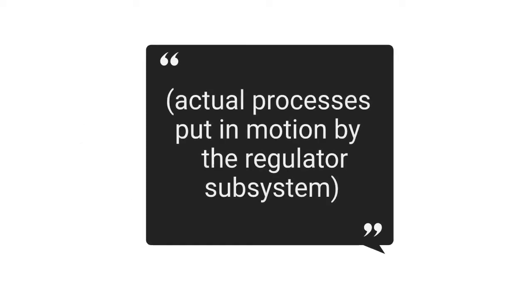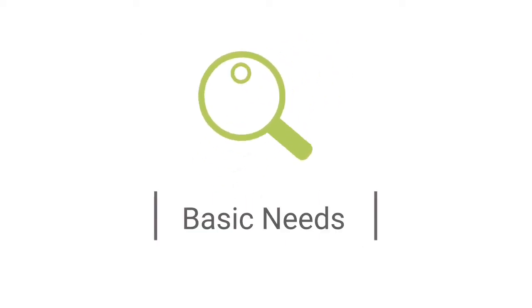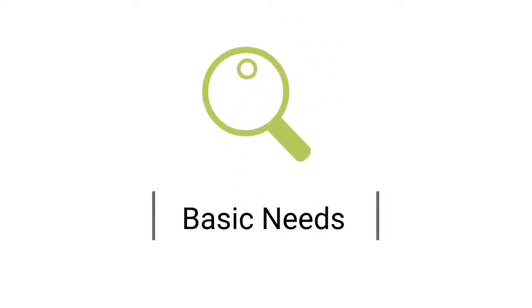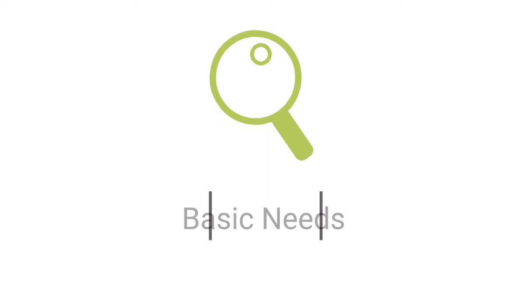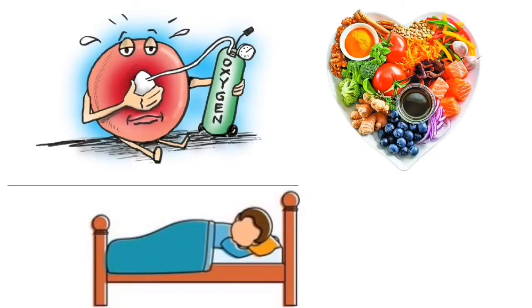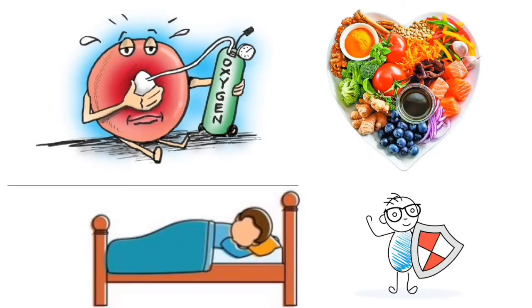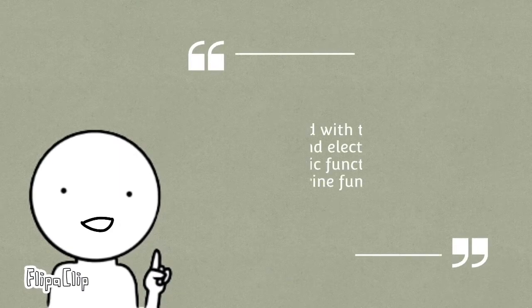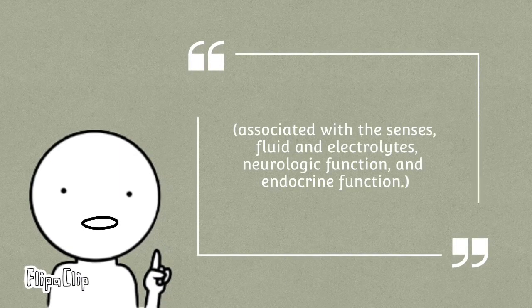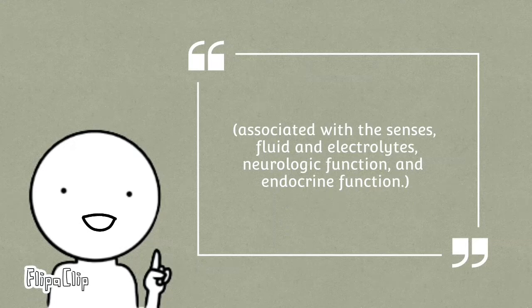The physiological/physical mode involves physical and chemical processes in the function and activities of living organisms. These are the actual processes put in motion by the regulator subsystem. This mode's basic needs are composed of oxygenation, nutrition, elimination, activity and rest, and protection. Its complex processes are associated with the senses, fluid and electrolytes, neurologic function, and endocrine function.